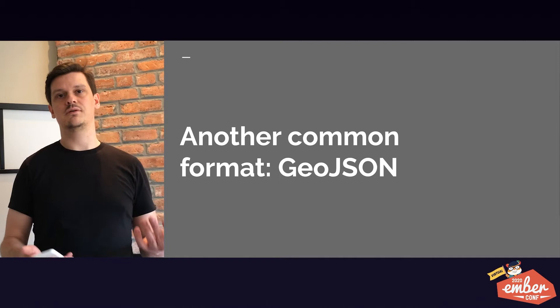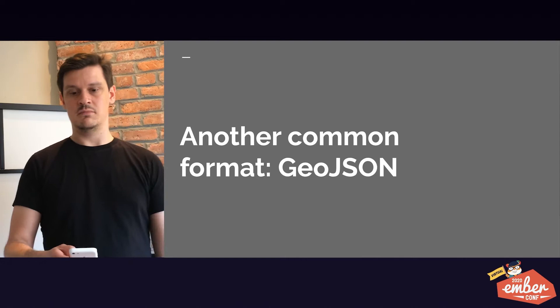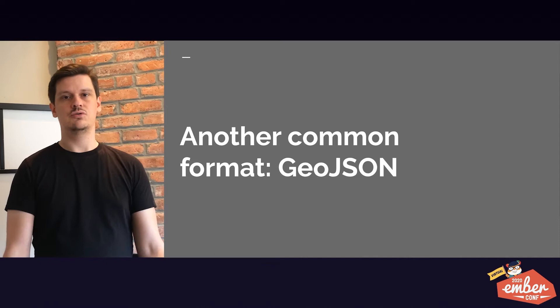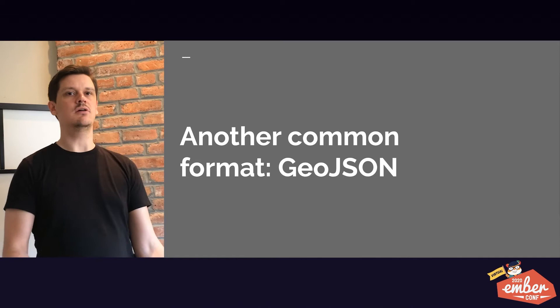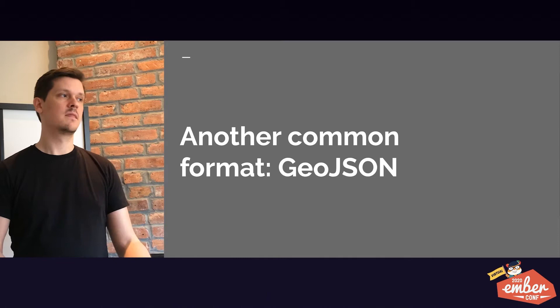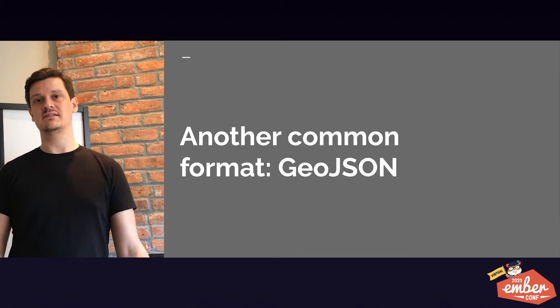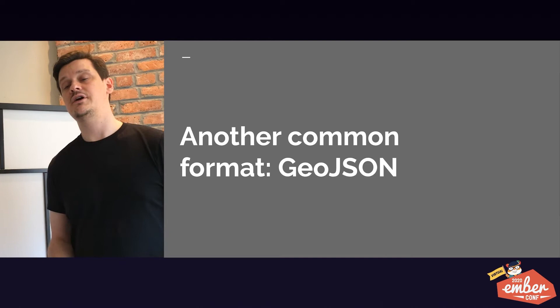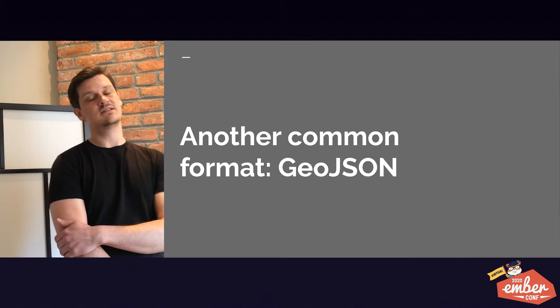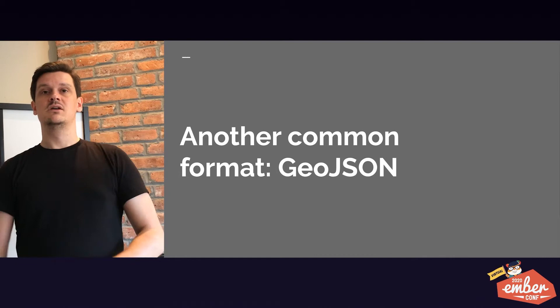Another common format — probably what most people should use for most problems — is GeoJSON. GeoJSON is good for smaller data sets. Basically the full spatial data is downloaded into the browser. If you have a very large data set it's not going to work, but for most use cases you can really get away with GeoJSON. What is GeoJSON? It's just an opinionated JSON format for storing spatial data. Think of it as a JSON API, but for geography — map data.